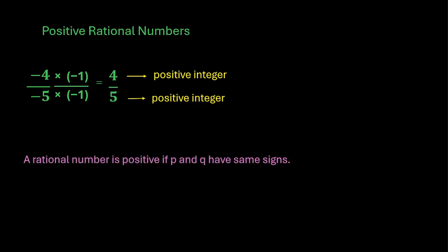A rational number is positive if p and q have same signs. Either both can be negative or both of them can be positive. For example, minus 2 by minus 3, 7 by 4 and so on.